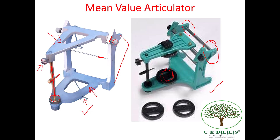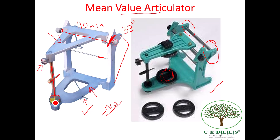Now, why the name mean value articulator? The name comes from the fact that the dimensions of the articulator are taken from a mean of an average population. These dimensions are: the intercondylar distance — the distance from this point to this point — is 110 millimeters, the angulation of the condylar slot is 33 degrees, and the angulation of the incisal guide table is 10 to 15 degrees. Because of these three mean values, the name mean value articulator is used.